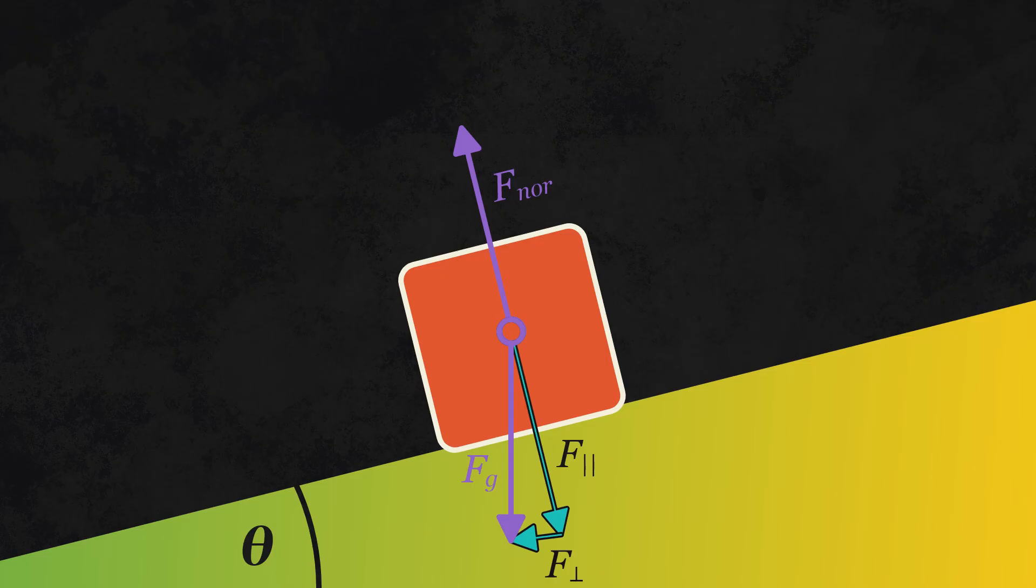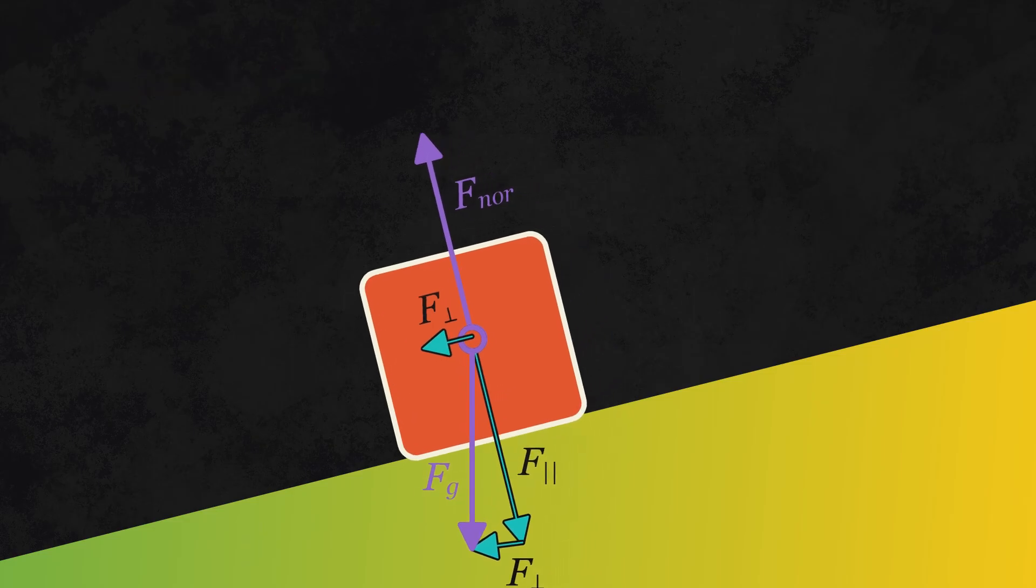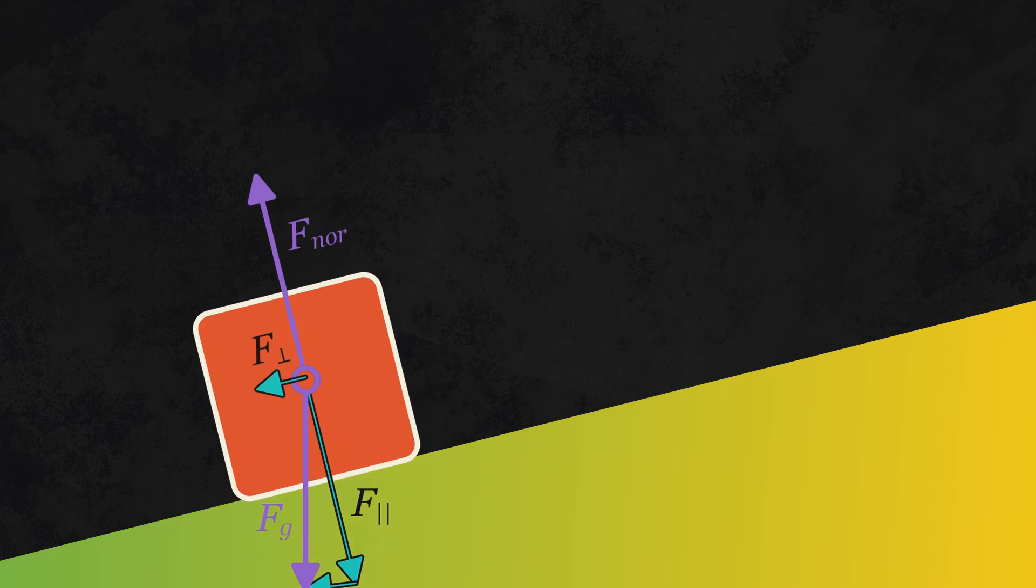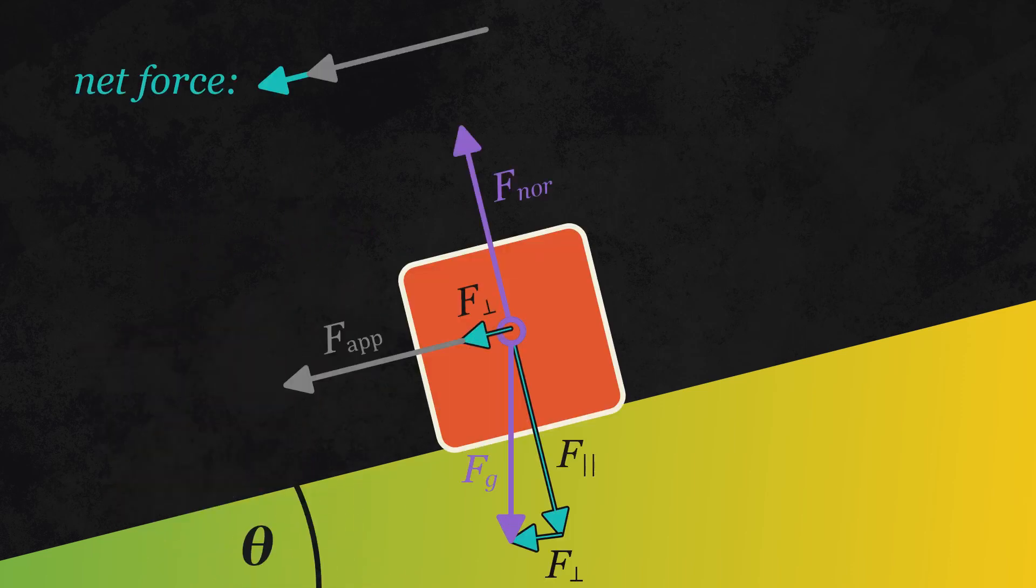However, the component that's perpendicular to the normal force is pushing the object down the plane. Because of this, if an object is sitting on an inclined plane, it will begin to accelerate, because this force acts like an applied force. If there's already an applied force, just add the two together.